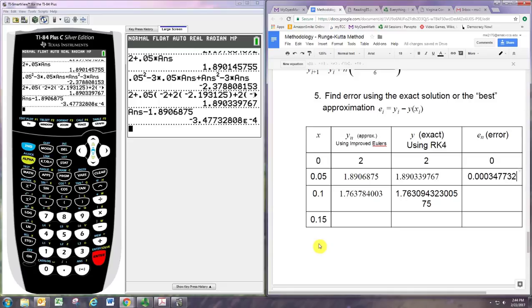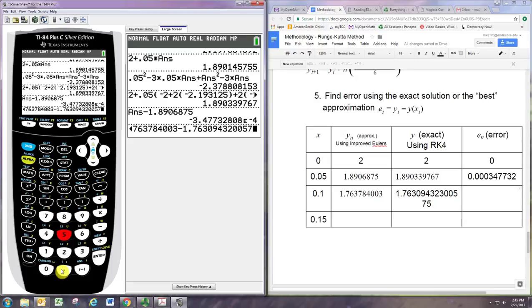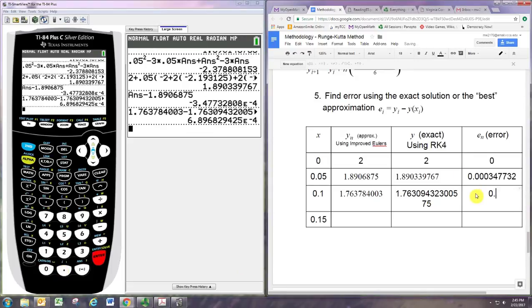The sign of the error is usually not that important. So if you subtract the wrong way and get a negative error, just typically take the absolute value of that. Let's try to subtract these two numbers now. Keep in mind this is error for the improved Euler's method.